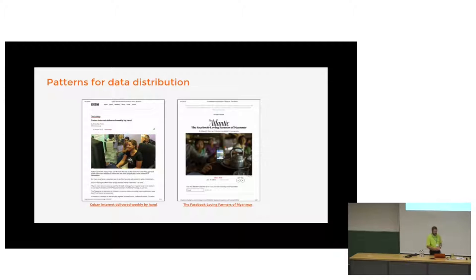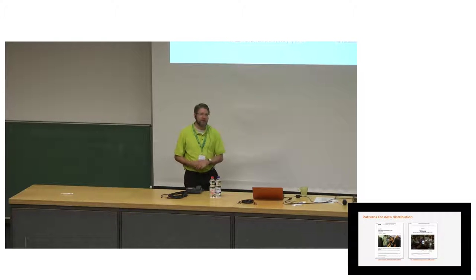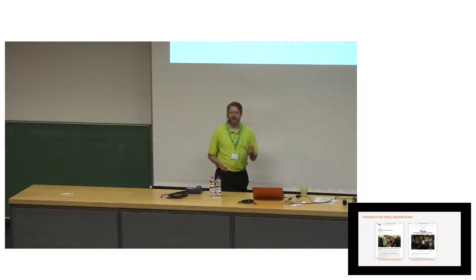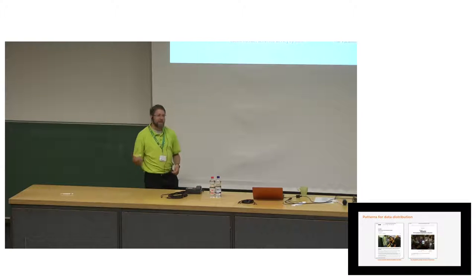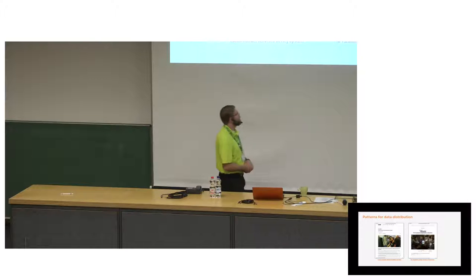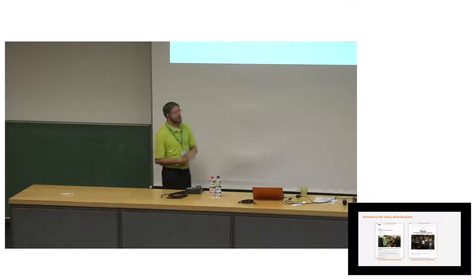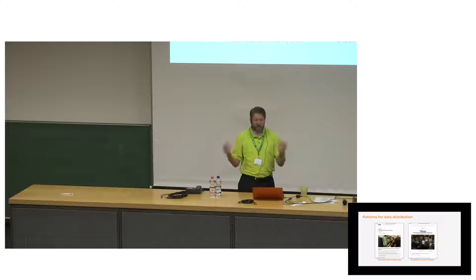Myanmar has an interesting example with an app called Zapia, which has over 450 million downloads and claims 450 million users. It's basically a peer-to-peer Android app that lets you download information onto your phone and share it with your neighbor. People go into town, get Wi-Fi access, download a bunch of content, go home, and share it amongst themselves. They've been able to propagate articles on sports and politics — though the government has strong opinions on that last one. People really want this access and always find ways to get it.